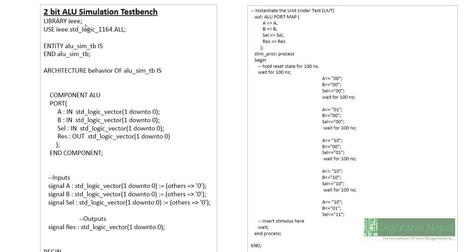Now let's look at the testbench simulation for the 2-bit ALU. It is quite simple: we have library declarations, the input entity, and the architecture. Inside the testbench, we declare a component of the ALU and then end the component. We declare signals representing the inputs and variables of the ALU. Then in the `begin` section, we have port mapping of the unit under test — signal A maps to ALU port A, B maps to ALU port B, `sl` maps to ALU `scl`, and `res` maps to ALU result.